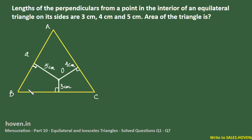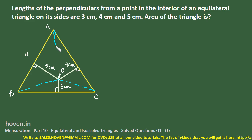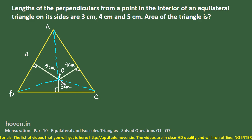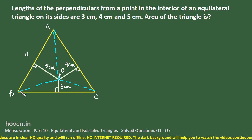The best approach in this case is to call this interior point O, and join the vertices A, B, C to point O. This creates three triangles: triangle COB (the lower part), triangle AOC, and triangle AOB. We know the height of all three triangles — these are the perpendicular lengths 3, 4, and 5 — and the base of all three triangles is the side a.